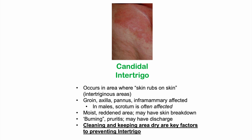To summarize the distinctions: intertrigo occurs where skin rubs on skin and the scrotum is often affected in males, whereas in tinea cruris the scrotum is not affected. Tinea cruris shows centrifugal spread, whereas candida intertrigo does not. In intertrigo we see skin breakdown and sometimes discharge or a moist appearance, which is different from tinea cruris.